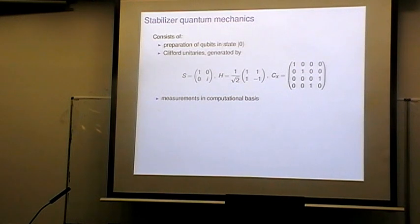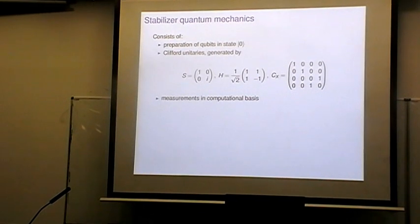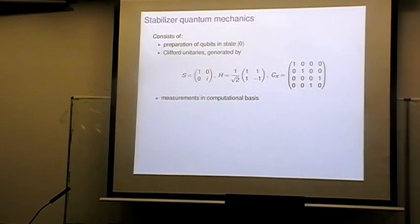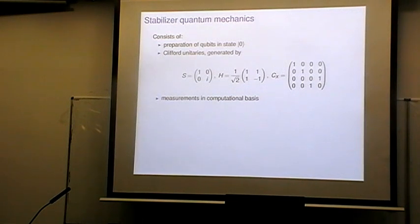For the rest of this talk I'll focus on stabilizer quantum mechanics, which is the part of quantum theory in which you're only allowed to do preparations and measurements in the computational basis, and additionally the Clifford unitaries, generated by the S gate, phase, Hadamard, and controlled-NOT. Stabilizer quantum mechanics is classically simulable, but nevertheless of much interest — it shows quantum phenomena like teleportation and non-locality, and is central to error correcting codes and measurement-based quantum computation.